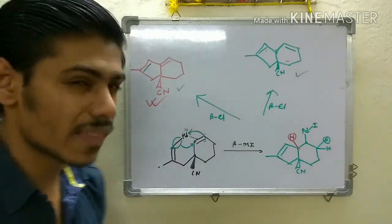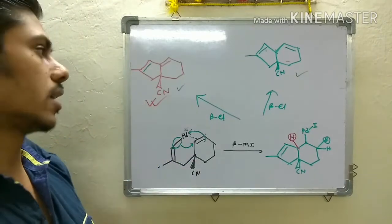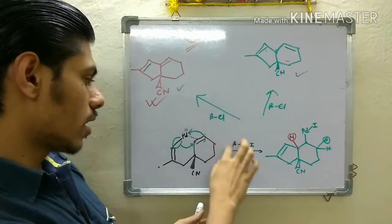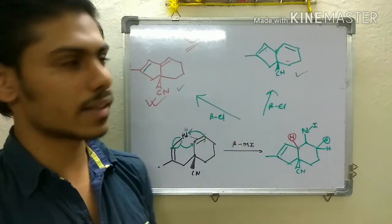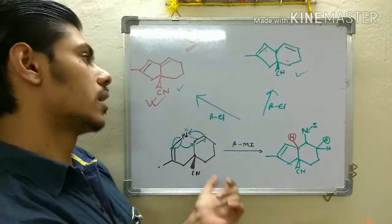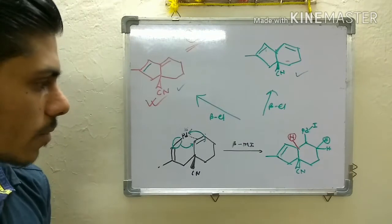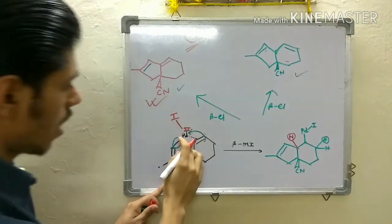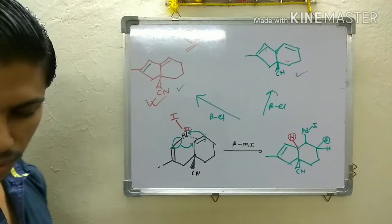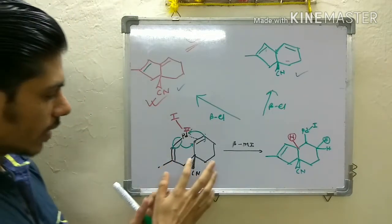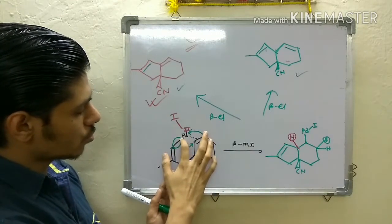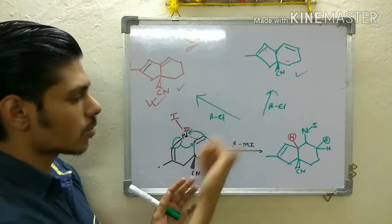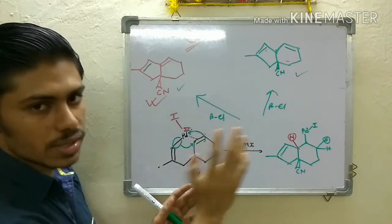But if you pick that answer you will get zero marks! I ignored the stereochemistry of the reaction, and if you do the same thing in the exam you will end up with the wrong product. In this beta migratory insertion step, when it happens it has to occur either from the top face or the bottom face of the alkene — it has two faces. I didn't mention any stereochemistry there, but I should. The cyanide group is at the top face.